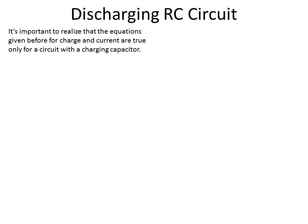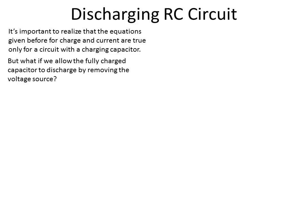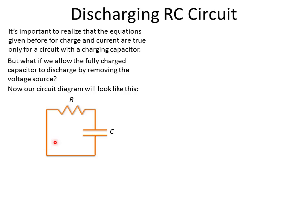Now we're going to look at another circuit, very similar to the previous ones where we charge an RC circuit — we have a resistor and a capacitor — but this time we're going to actually take away the battery. So we're going to start with the same circuit we had before, charge up the capacitor until it gets its full value, and then take the battery out. So we're left with a charged capacitor and a resistor.